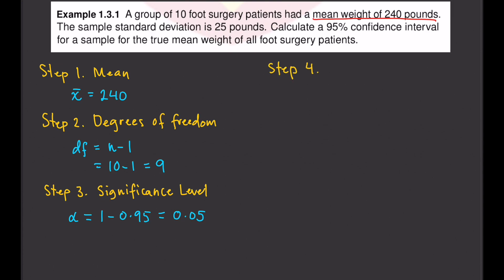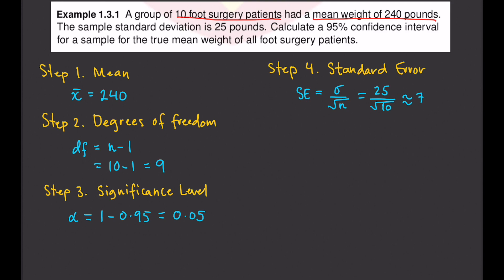Step four is to find the standard error. The standard error SE is equal to the standard deviation divided by the square root of n. The standard deviation is 25 pounds divided by the square root of 10, which is approximately 7.9057.